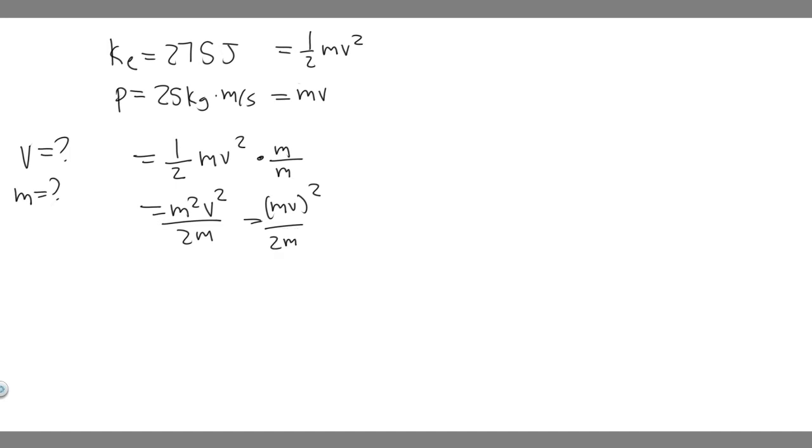Since p equals mv, we're going to plug in p right here, so it's going to be p squared over 2m. And so now notice this is the only variable left that we don't know because this is the kinetic energy, because all we did was manipulate this formula. So the kinetic energy equals the momentum squared over 2m, and so we know these two variables, so we can just solve for m.